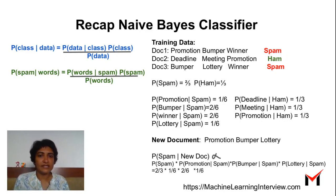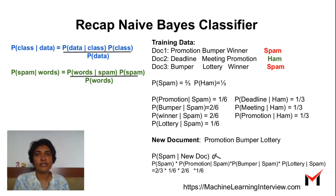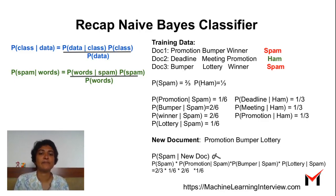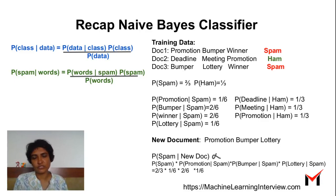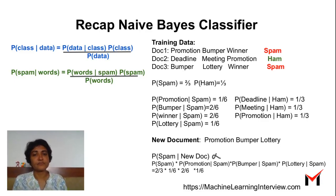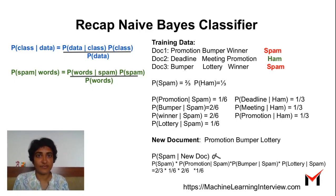Given a new document with 'promotion', 'bumper', and 'lottery', you can calculate probability of spam given the new document as: probability of spam, times probability of 'promotion' given spam, times probability of 'bumper' given spam, times probability of 'lottery' given spam. There's also a denominator which acts as a normalization constraint. This is how the Naive Bayes classifier works.